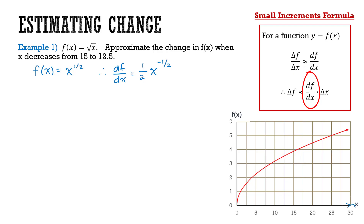Now what I want to do is calculate that value at x equal to 15, so I can determine the size of the slope at this point. I substitute x equal to 15 into this equation and I get 0.129. This tells me that for every unit change in my x axis, I would have a change in the vertical axis of 0.129.